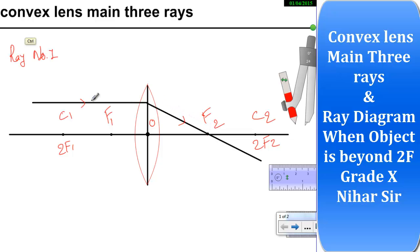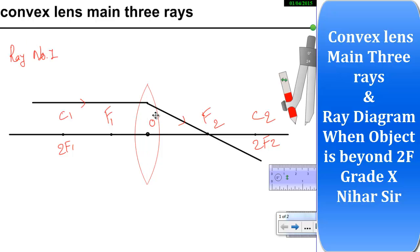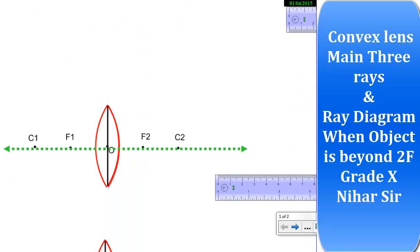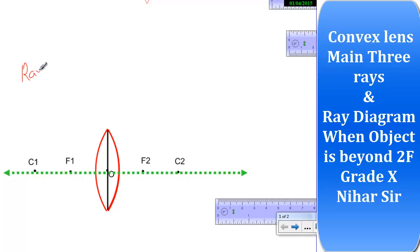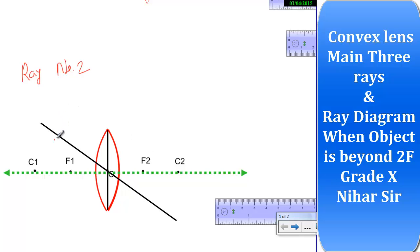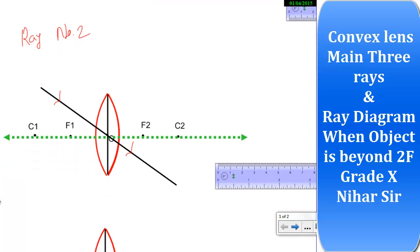A common mistake students make is bending the ray from the wrong place — the ray must refract at the lens line, not before it. That is why the temporary center line is kept; once you complete everything, remove that line. Ray number 2 is the favourite for students: a ray passing through O, the optical center, will travel straight without any deviation. Incident ray and refracted ray are in the same direction — it is very easy to draw.